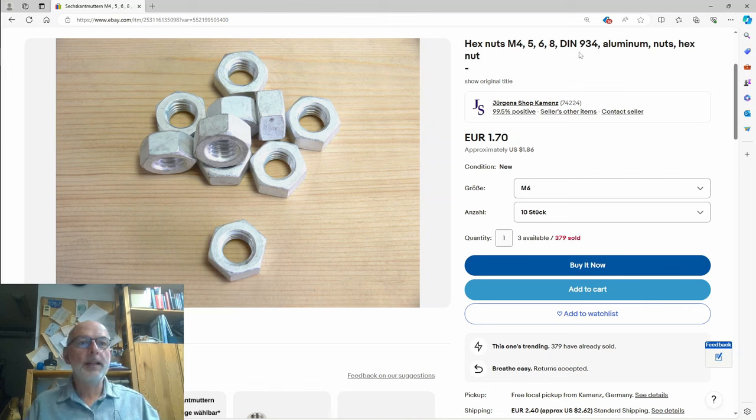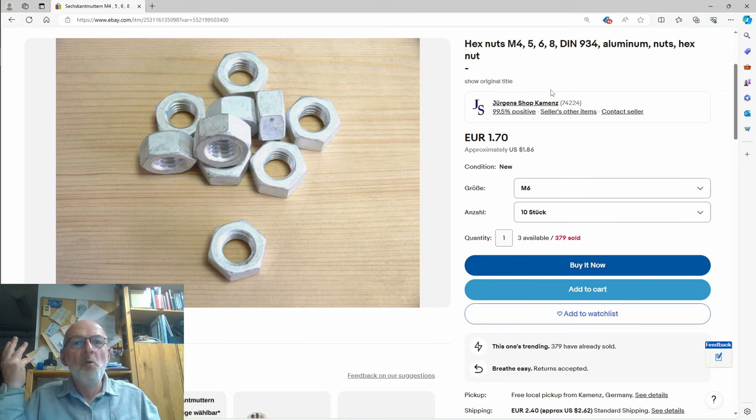These were the hex nuts I got, M6 DIN 934 aluminum, 10 pieces for €1.70 plus €2.40 shipping in Germany from Jürgens. That's just the name of the shop.